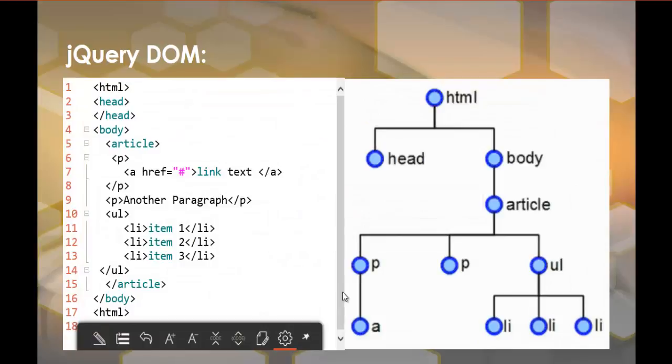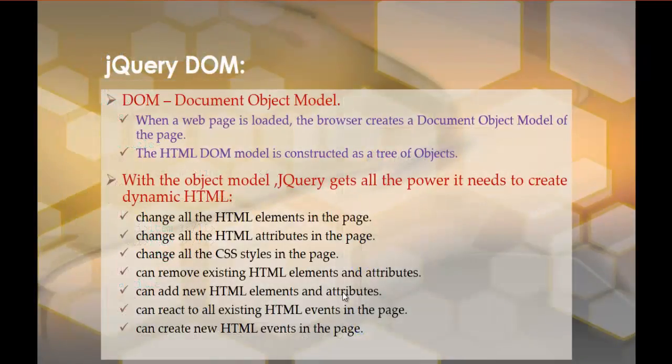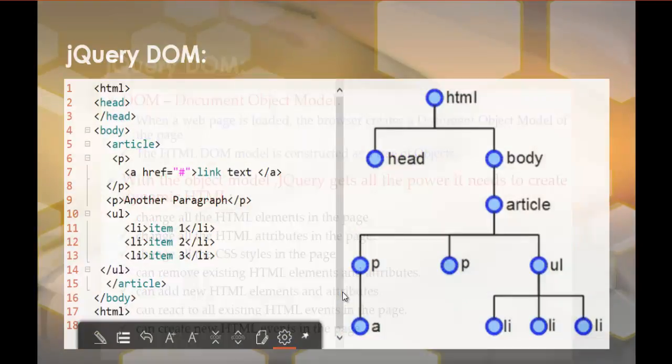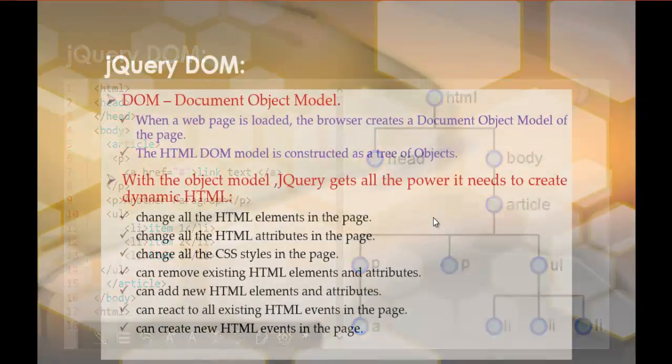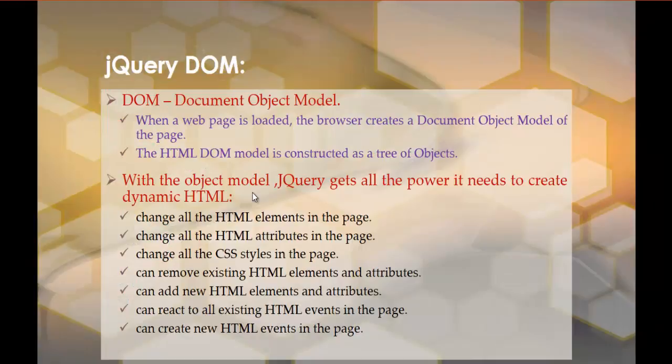So what we understood from this session is what is DOM—what happens when your web page loads and what your browser does. It creates a document object model of the web page. The HTML DOM model is constructed as a tree of objects. Once you have that object model, document object model, with the help of jQuery, jQuery will get all the power to create dynamic HTML.